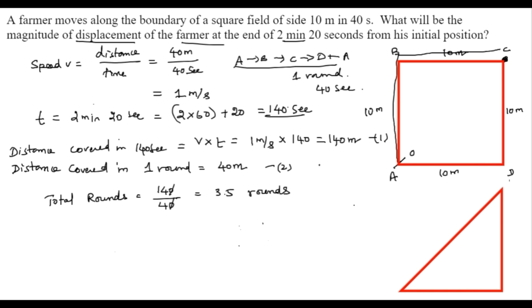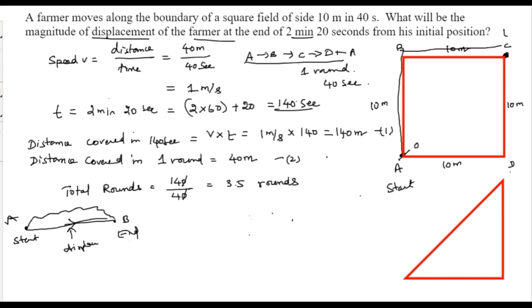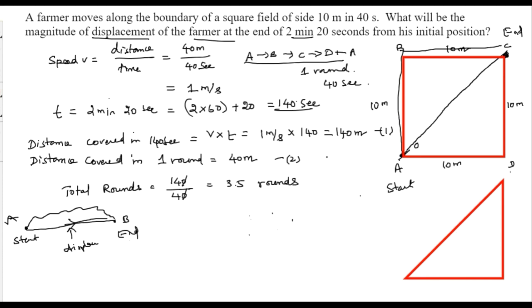After 3.5 rounds, the starting point is A and the final point is C. To calculate displacement, we concentrate on the starting point and the end point — the straight line connecting them represents the displacement, and its direction is from A to C.